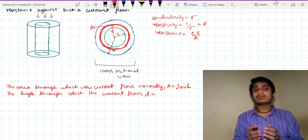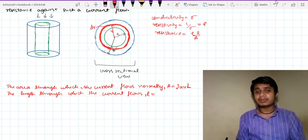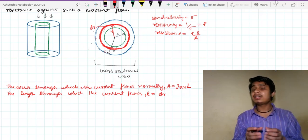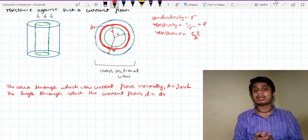So the length through which it is flowing is nothing but dr. The current is diverging from the center in the direction of dr only.